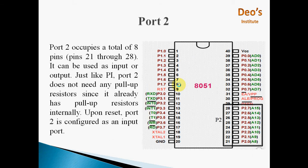Port 2 occupies total 8 pins from pin number 21 to pin number 28. It can be used as input or output. Just like port 1, port 2 does not need any pull-up resistor since it already has pull-up resistors internally. Upon reset, port 2 is also configured as an input port.